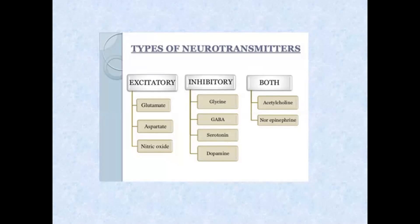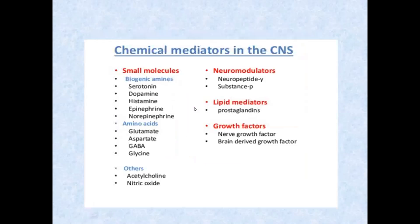In the exam, you may get questions like 'write any two inhibitory neurotransmitters present in CNS.' In our syllabus, you have to know GABA, glutamate, glycine, serotonin, and dopamine. You should know the key points about each of these neurotransmitters.